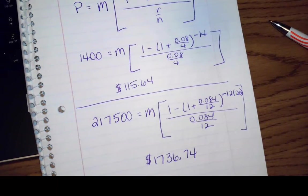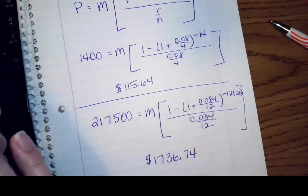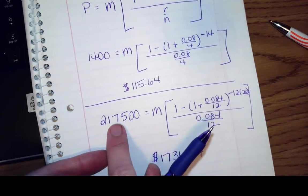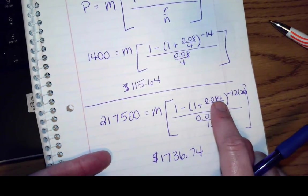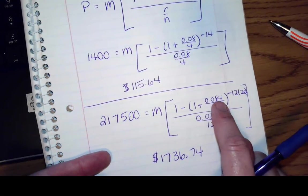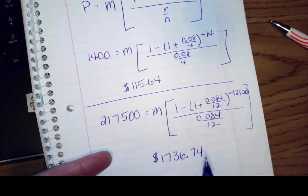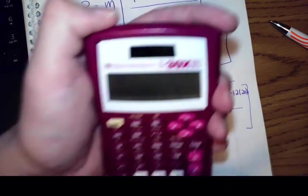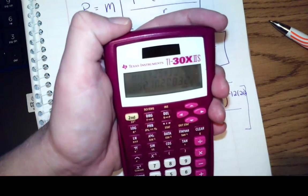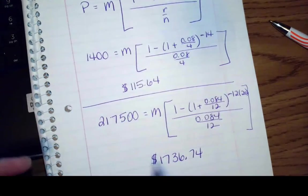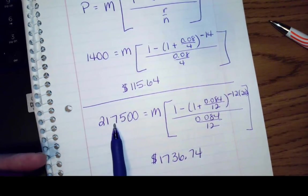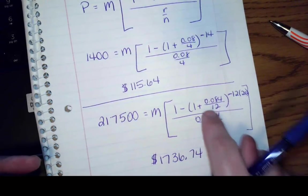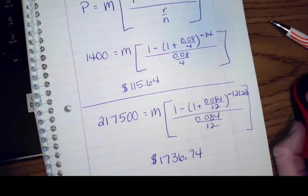Just for fun, when you pay that back, if this is your monthly payment, because remember this is your present value of your loan, if you're at 8.4% interest on your mortgage, which is extremely high, all I did was take this monthly payment times 12 months times 25 years, you're going to end up paying the bank back $521,000. So you are more than doubling what you took out because your interest rate is so high.